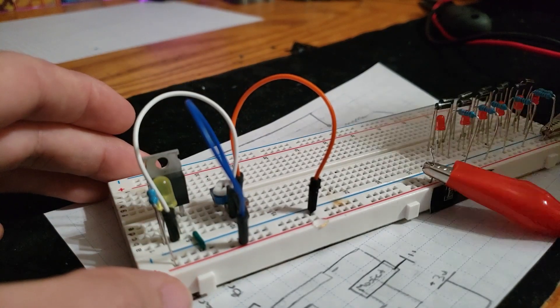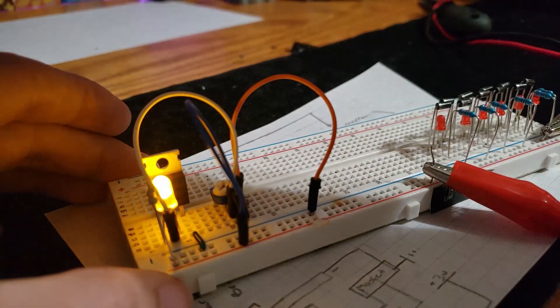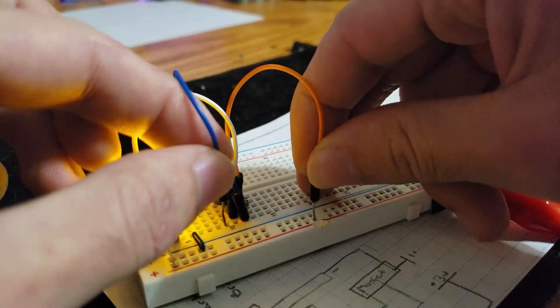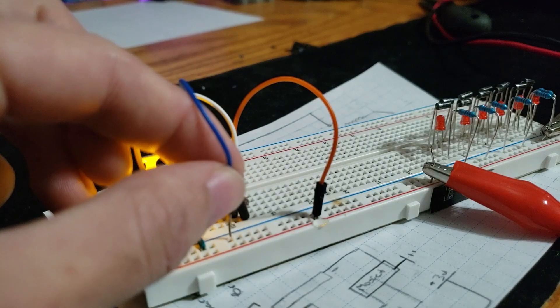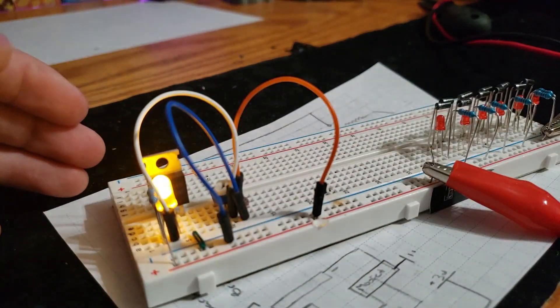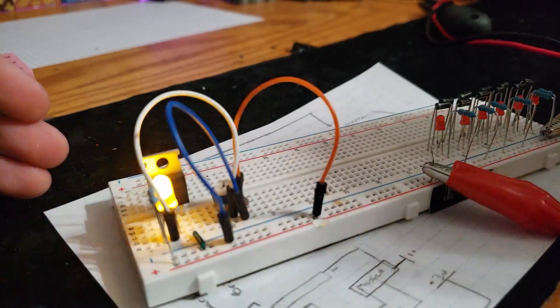Now if I flip these so that the orange is on power and the blue is on ground, if darkness is applied, the light goes off.